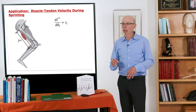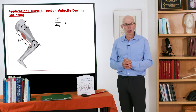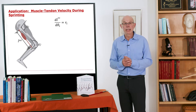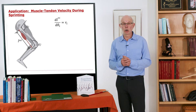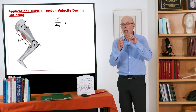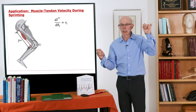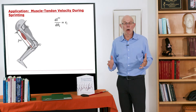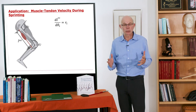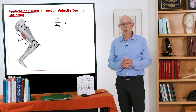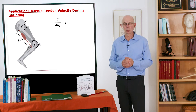Once a hamstring injury happens, it tends to recur, and people miss whole seasons because of it. These injuries occur primarily when the muscle is stretching under eccentric contraction — stretching at a high velocity with high force. So what if we wanted to know how fast the hamstrings are stretching during sprinting? We can do this with analysis of musculoskeletal geometry.